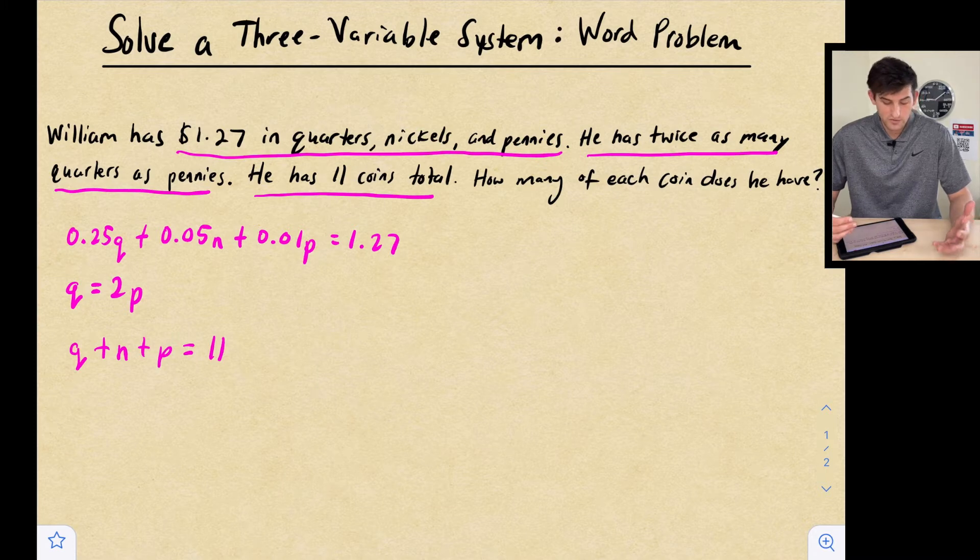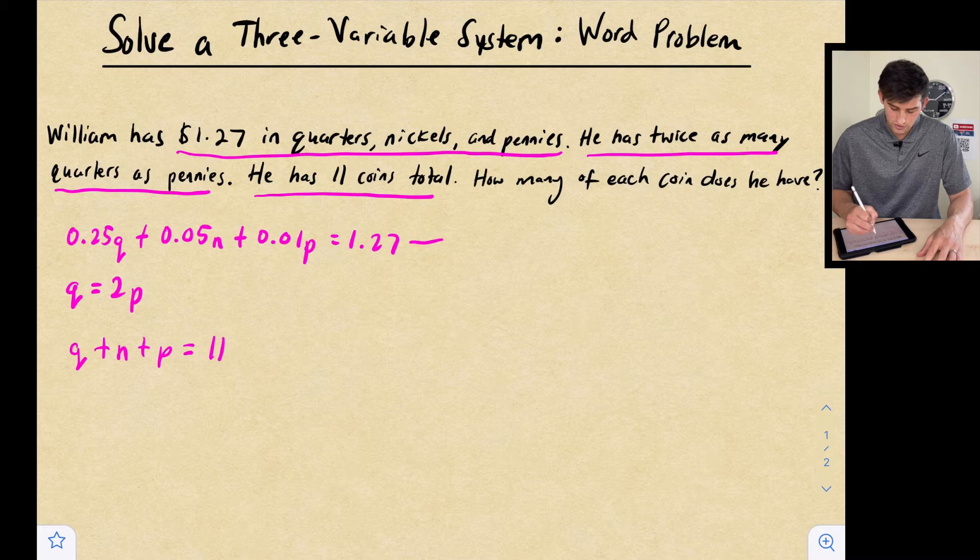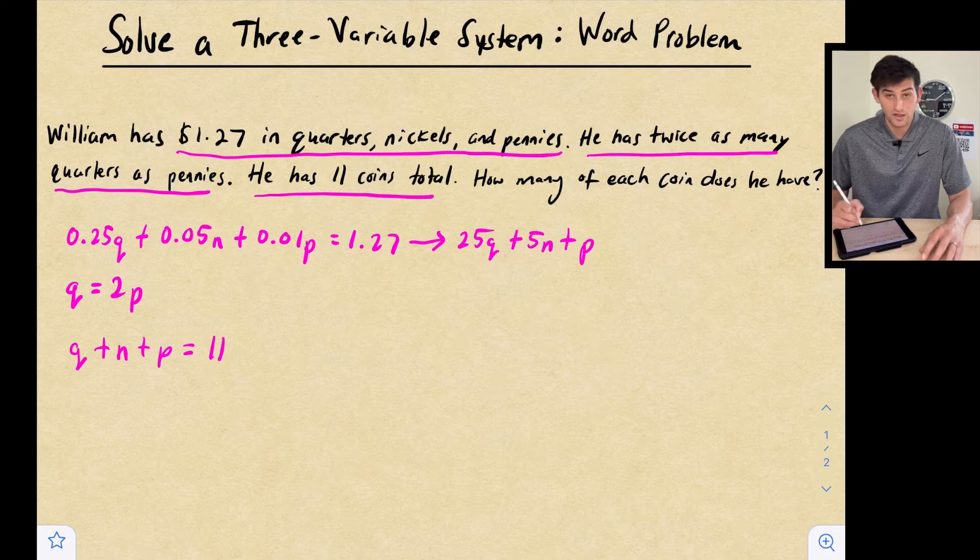So for all of these numbers, we have two decimal places in the first equation. So let's multiply the top equation by 100. So now it's going to become 25Q plus 5N plus 1P or just plus P is equal to 127.